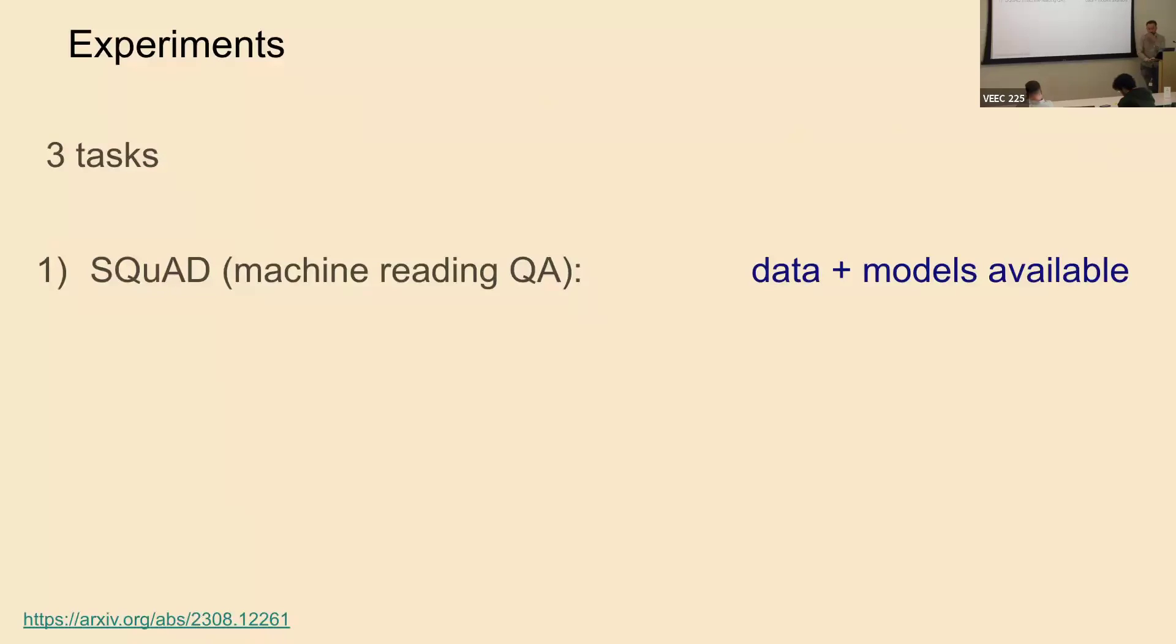We have some experiments. Basically, what we did is we had three tasks. We picked these tasks intentionally because we wanted tasks that represented a variety of situations where people might actually use models. For the first one, we did SQuAD, which is machine reading question answering. Here, there's lots of data and models available. We would expect that even if you were just able to retrieve the best model from Hugging Face, you'd actually do reasonably well on this. Is this cheating? I think it's actually not cheating because a lot of people want to do very traditional tasks and they just need guidance towards the right model or right dataset to train on. That's one use case.